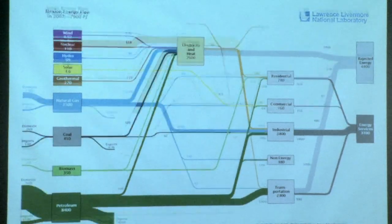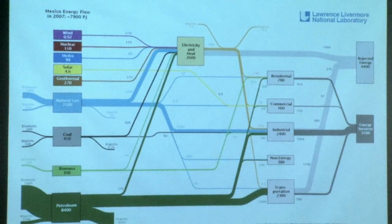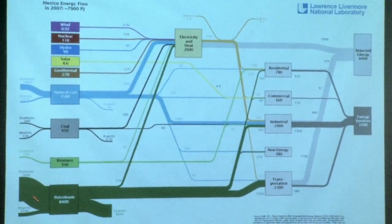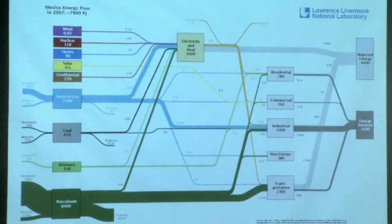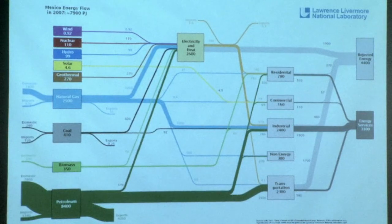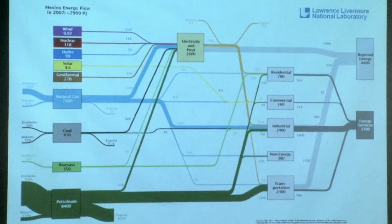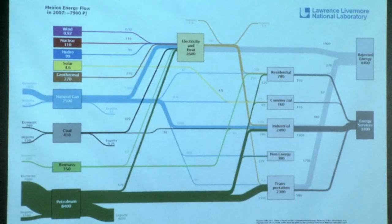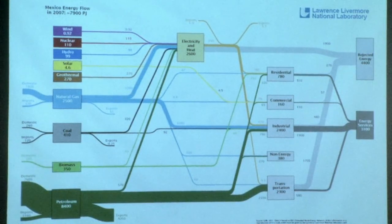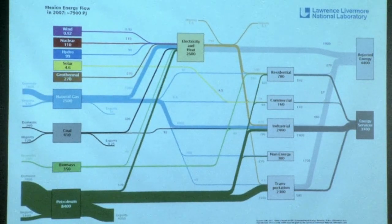Let's leave the developed world. There's a middle income neighbor: Mexico. Mexico has oil — Mexico is a significant oil exporter. Mexico's oil production is declining, so Mexico has a long-term problem. It heavily uses its oil and natural gas to generate electricity. All of these have electricity going into transportation — and that's not electric cars in Mexico in 2007. That's railroads and mass transit.